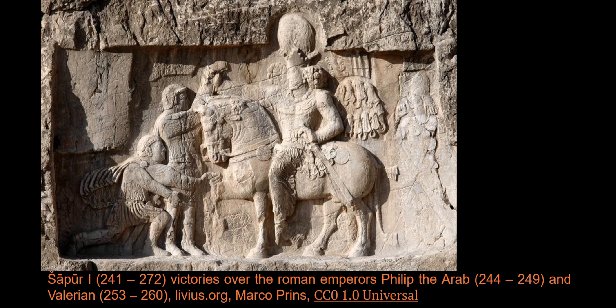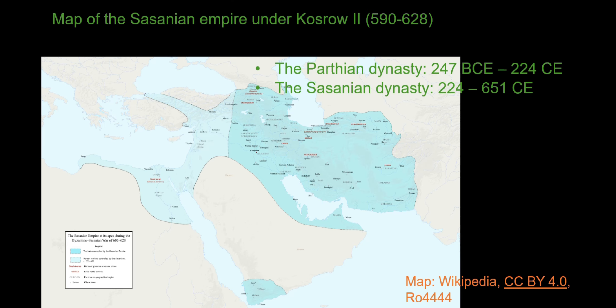Before diving into today's subject, I would like to do a very quick reminder of what has been said about the period I am working on and the corpus I use in these videos as examples. The late antiquity in Iran corresponds to the period of the Sassanian dynasty. The Sassanian dynasty ruled over the Persian Empire from 224 to 651, taking over until the conquest of their empire by the Arab Muslims.